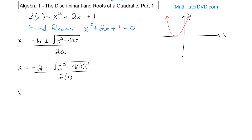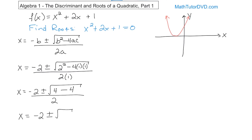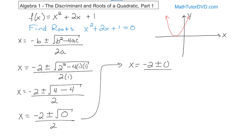Now let's crank through these numbers. x equals negative 2 plus or minus — on the inside, 2 squared is 4, minus 4 times 1 times 1 is also 4 — so we have the square root of 4 minus 4, which is 0, on the bottom I have 2 times 1 is 2. So we have negative 2 plus or minus the square root of 0 over 2. What is the square root of zero? We're looking for a number times itself that gives zero, and the only one that works is zero. So the square root of zero is zero.